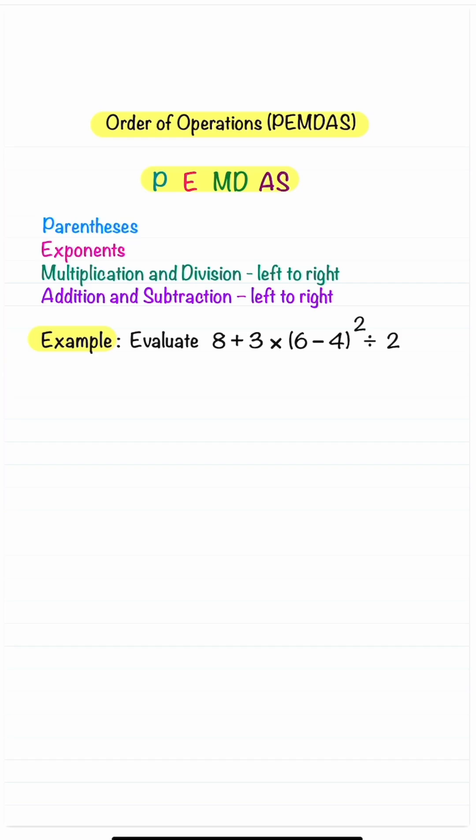In our example, we're first going to simplify what's inside the parentheses. We have 8 + 3 × (6-4)² ÷ 2.